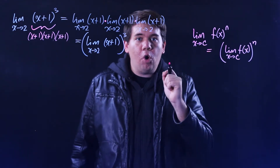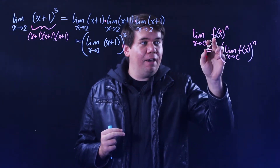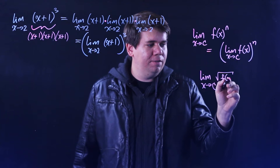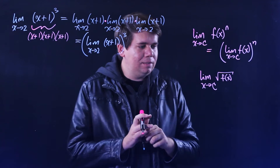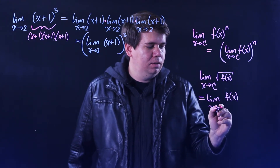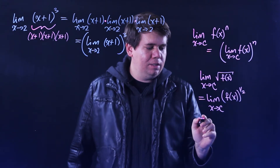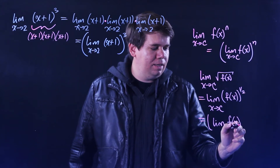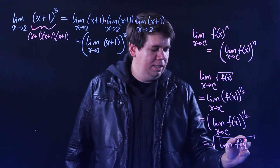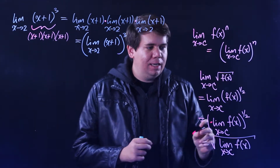It turns out this doesn't only work for integer powers of n, but also for non-integer values like fractions, like f to the 1/2. For example, if you have the limit as x goes to some constant of the square root of a function — remember, the square root is secretly just the function to the 1/2 power — then this should just be the same as the limit of f(x) all to the 1/2. So you can pull the power out of the limit, or move the limit into the power, and the same thing applies with roots.